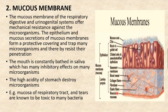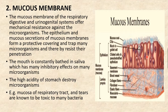The mucous membrane lines body cavities that open to the exterior, such as the respiratory tract, gastrointestinal tract, and genitourinary tract. Mucous membranes are composed of an epithelial layer that secretes mucus and a connective tissue layer. The mucus acts as a physical barrier that traps microbes and contains the enzyme lysozyme, which degrades the bacterial peptidoglycan layer. It also produces secretory IgA (immunoglobulin A), which can prevent microorganism entry.